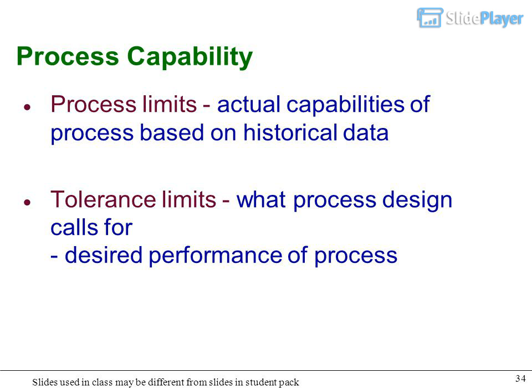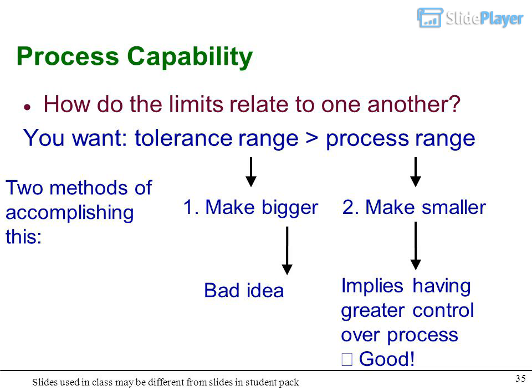Process capability: Process limits are actual capabilities based on historical data. Tolerance limits are what process design calls for - desired performance. How do the limits relate to one another? You want tolerance range greater than process range. Two methods of accomplishing this: Make tolerance range bigger - bad idea. Make process range smaller - implies having greater control over process, good.